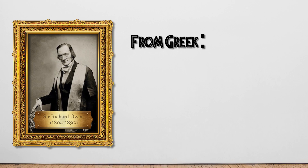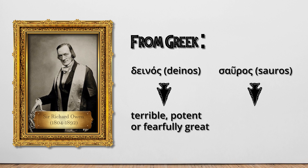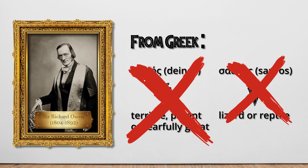In the 1800s we started discovering and studying a lot of large fossils using the then brand new and fast-growing branch of science, paleontology. Early paleontologists started calling these beasts 'dinosaur,' meaning terrible or fearfully great lizard — though we know now they're not necessarily terrible, and they're not even true lizards.